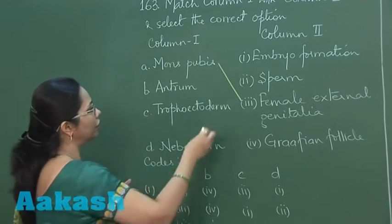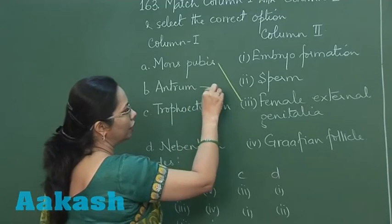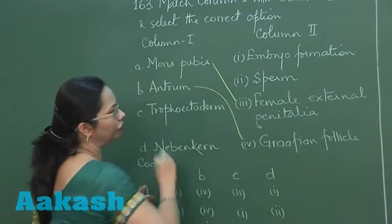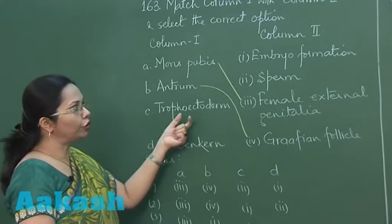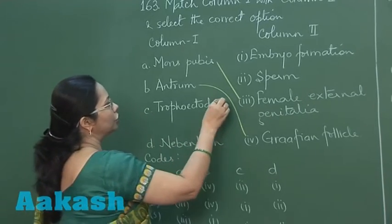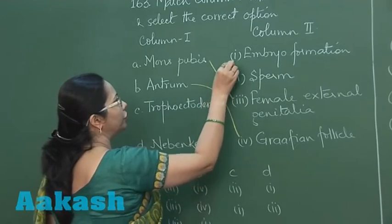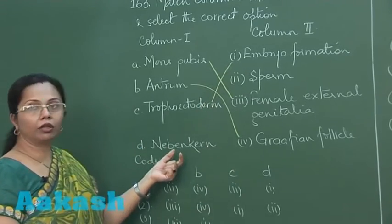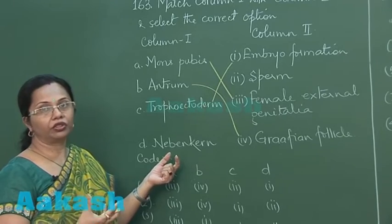So antrum we can match it with Graafian follicle. Trophoectoderm is part of the embryo and so this can be linked with embryo formation. And lastly, nebenkern, which is the group of mitochondria present in the middle piece of the sperm.